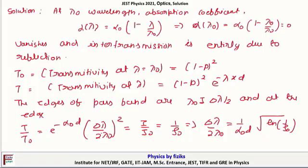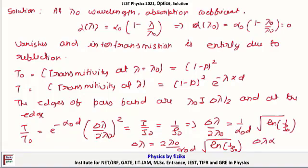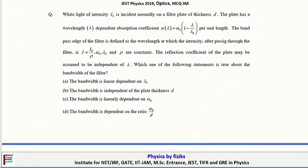Therefore, Δλ = 2λ₀ / (α₀d) · √(ln(1/ρ)). One can see that Δλ varies linearly with λ₀. The bandwidth is linearly dependent on λ₀. Therefore, option A is correct for this problem.